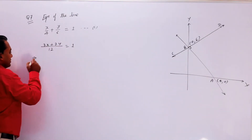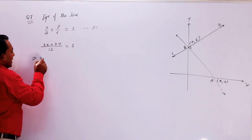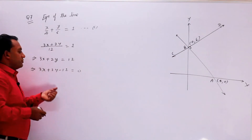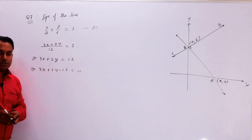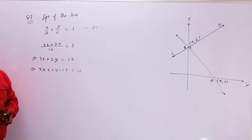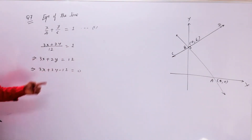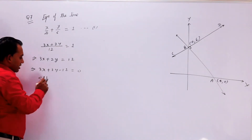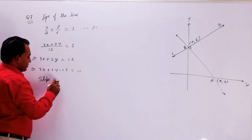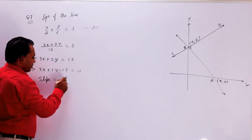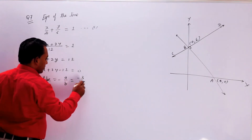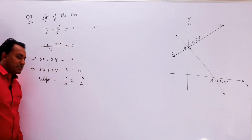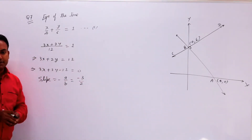इसका मतलब 3x + 2y - 12 = 0 — अब यह general form में convert हो गई line। अब इसकी slope पता कर सकते हो। Slope = -a/b, इसका मतलब slope of AB = -3/2।